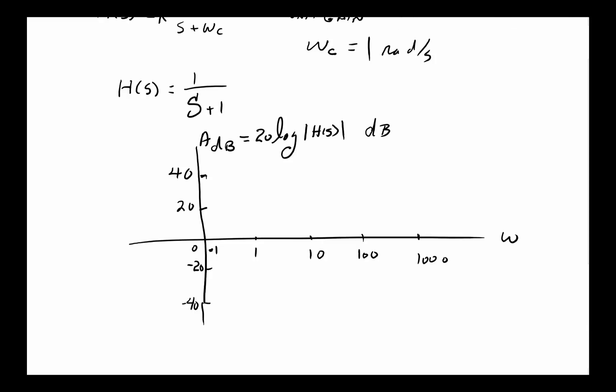Denominator roots are called poles. If you recall, for every root in the bottom, the slope is minus 20 dB. So what's going to happen is this is going to be 0 until 1,